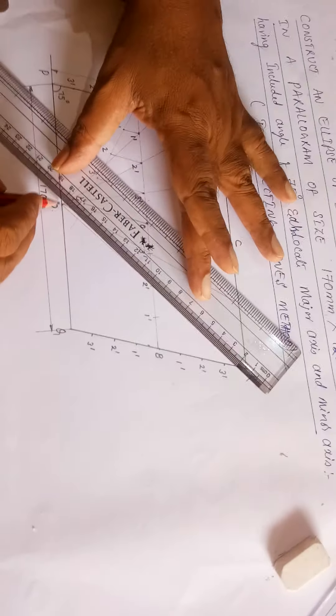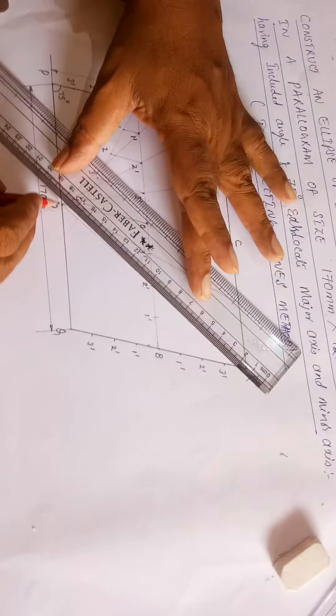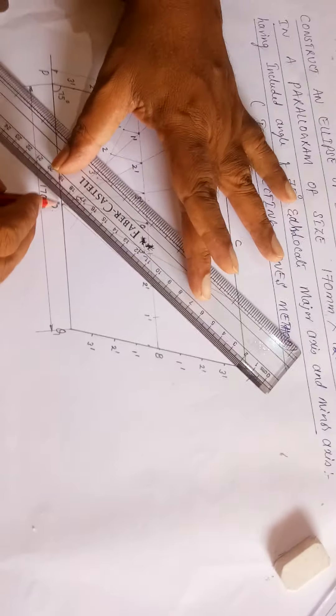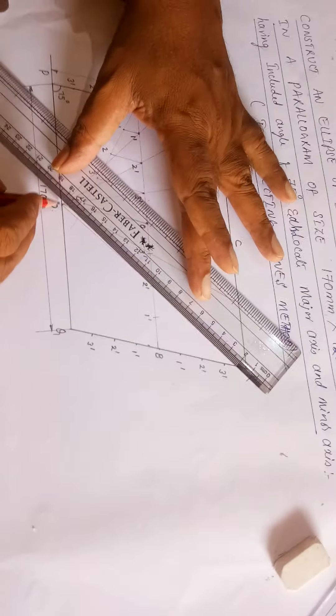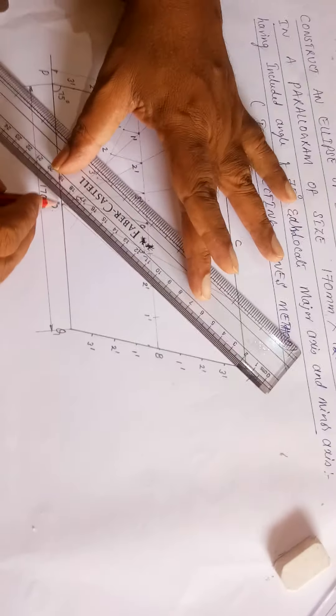Now divide AS into four equal parts. Since the half-side is 60 mm, you can divide it into four parts of 15 mm each. Do the same on the opposite side. Label these division points as 1 dash, 2 dash, 3 dash on one side, and 1 dash, 2 dash, 3 dash on the other side. This is the same procedure as used in the rectangle method.